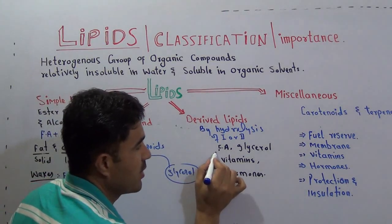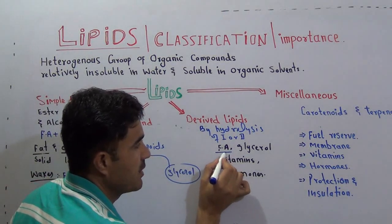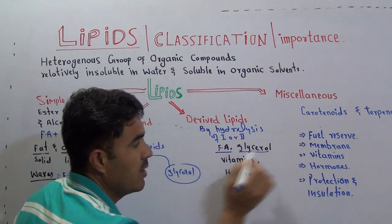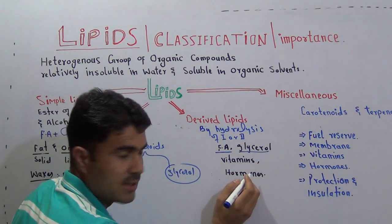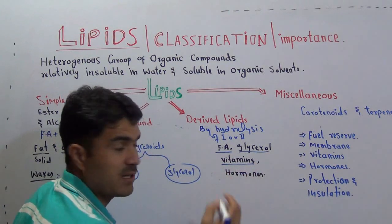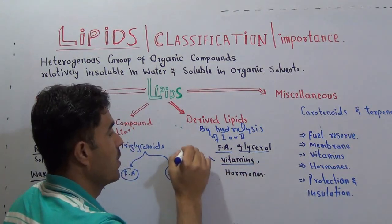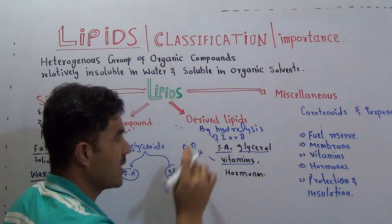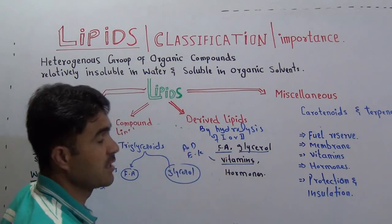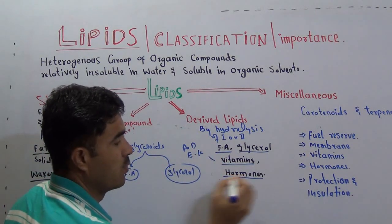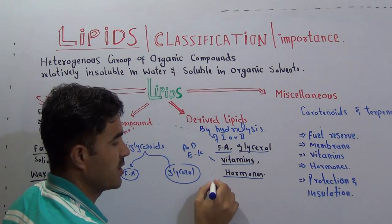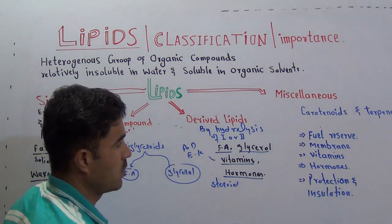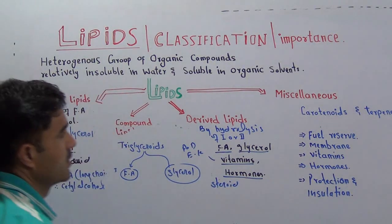Examples of derived lipids include fatty acids and glycerol. Also, fat-soluble vitamins like vitamins A, D, E, and K are derived lipids. And some hormones — especially the steroid hormones — are also derived lipids.